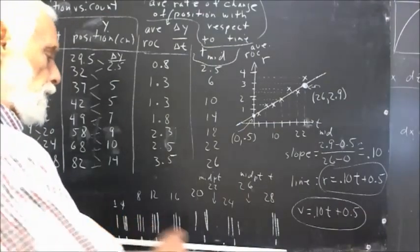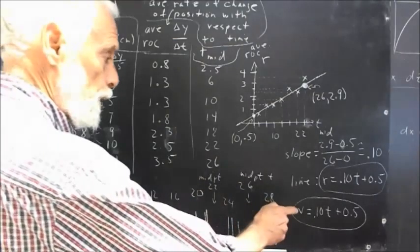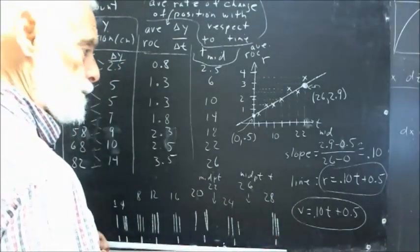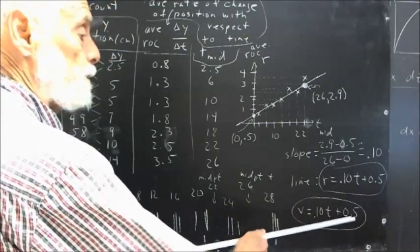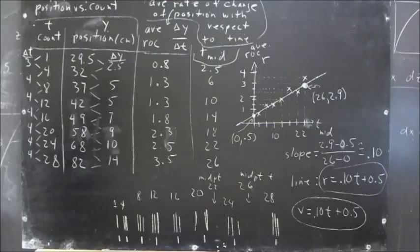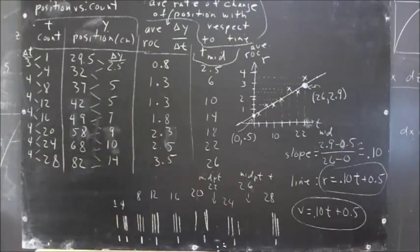So when the ball gets here, it should have taken 20 clicks and should be moving at 0.10 centimeters per click times T plus the 0.05. And again, the details, we go into a lot of detail. There's a better part of an hour of video on this thing.